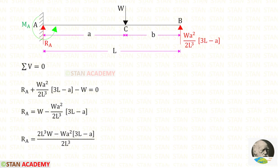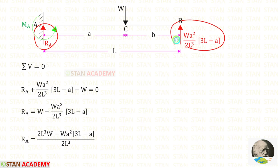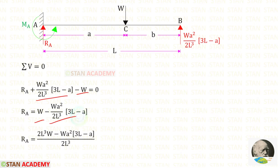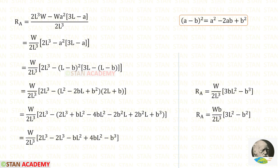Now let us apply sigma V = 0 and find RA. RA and RB are acting upwards, so both are positive. W is acting downwards, so it is negative. Taking those two terms to the other side with change of signs, and taking LCM for the two terms, we get 2L³W. We know that A = L − B.